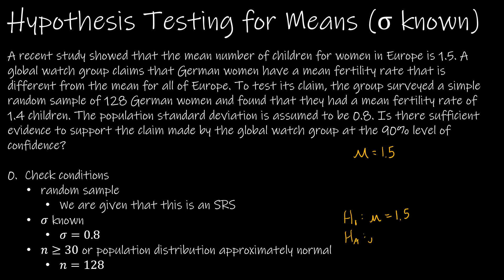Continuing on, a global watch group claims that German women have a mean fertility rate that is different from the mean. So different from indicates that there's no direction. It means it could be a lot less than 1.5 or it could be a lot more than 1.5. To test the claim, the group surveyed a simple random sample of 128 German women. So N equals 128. And found they had a mean fertility rate of 1.4 children. So that's our observed mean of 1.4.